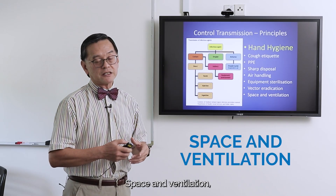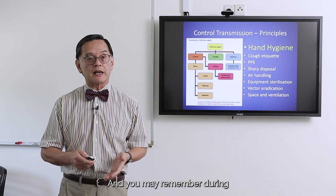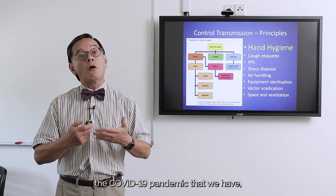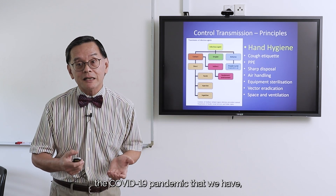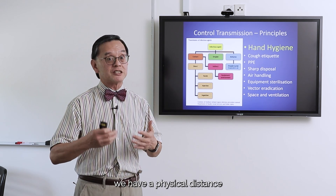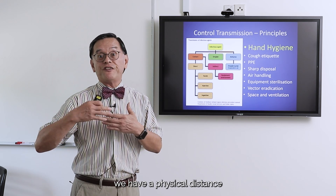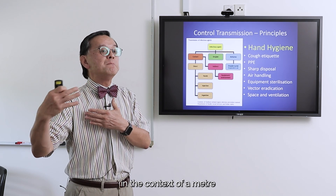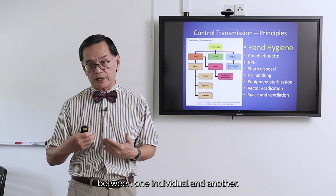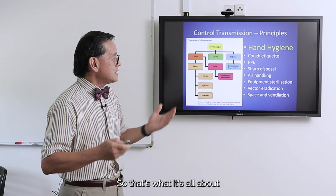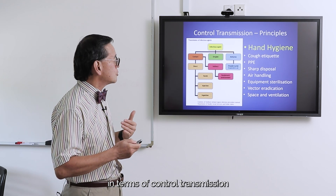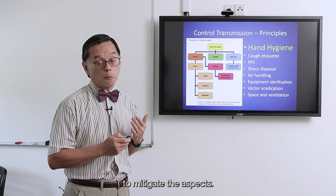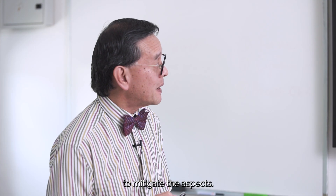Space and ventilation are also highlighted. You may remember that during the COVID-19 pandemic, we were required to maintain a physical distance of about a meter between individuals. That covers the key aspects of transmission control measures.